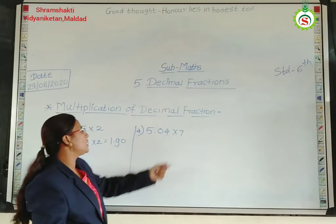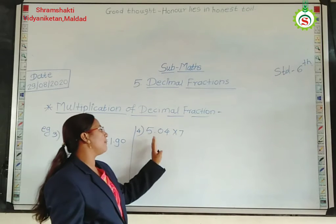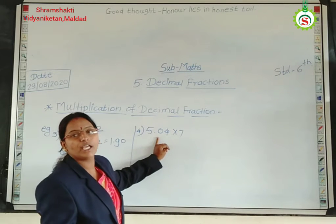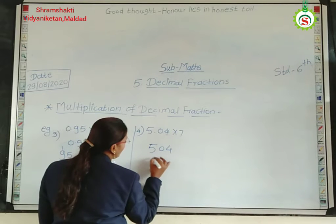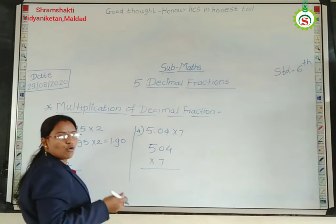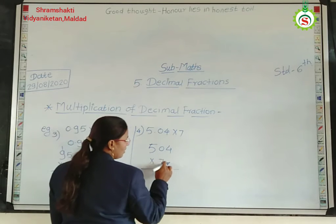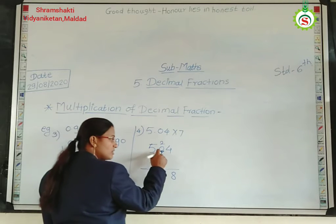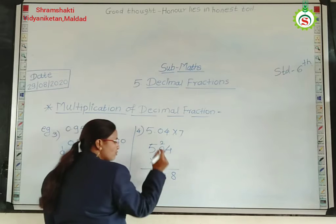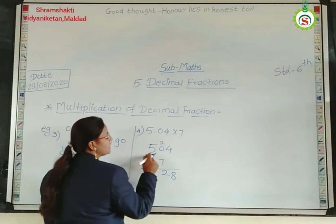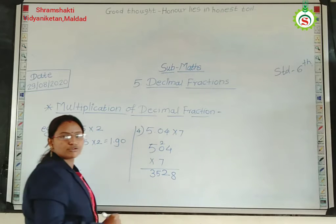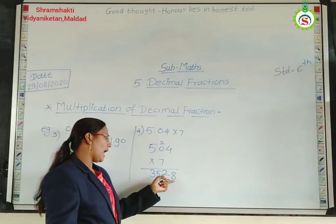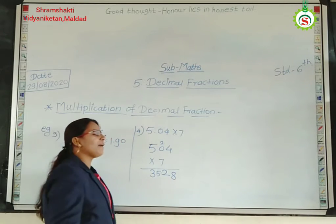Here, 5.04 into 7. In this first example, after the point there are 2 digits. First you have to ignore the point and write down 504. Do the multiplication by 7. 7 fours are 28, carry 2. 7 into 0 is 0, plus 2, write down 2. And 7 fives are 25. How many digits after the point? 2 digits. So you have to leave 2 places. The answer is 35.28.